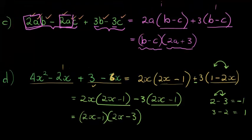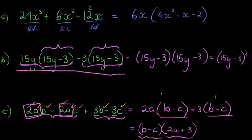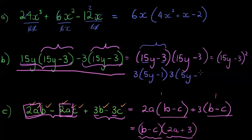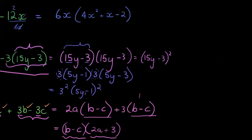The final answer is (2x − 1)(2x − 3). Now, going back to the earlier example — if we're asked to completely factorize, notice there's still a factor of 3 that can be taken from both 15 and 3. The first bracket can be written as 3(5y − 1), and similarly for the second. Since the whole thing is squared, this becomes 3² times (5y − 1)².